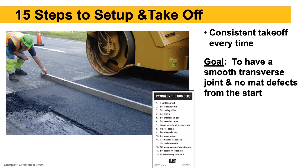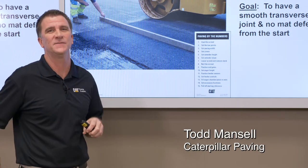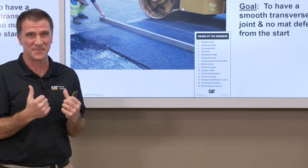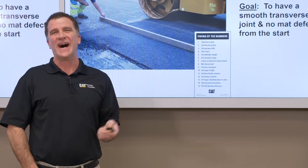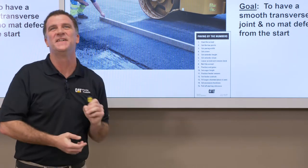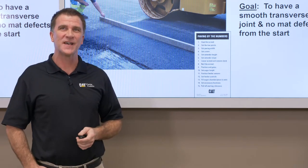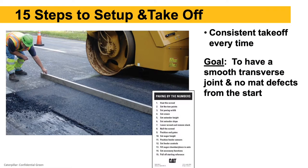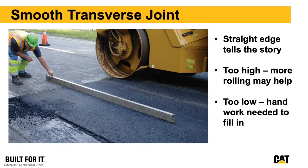What I'd like to cover now are 15 steps to setting up the paver before we take off. We've all felt those little bumps in the road — these 15 steps are focused on getting a consistent takeoff every single time. The goal is a smooth transverse joint with no mat defects right from the start. After we construct and compact our transverse joint, we put a straight edge on it — we want a smooth transition between yesterday's paving and today's start. The goal is to minimize or even eliminate hand work — set the paver down and take off without hand work.